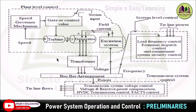This is a complete diagram of plant level and system level control along with the transmission system control. First we see about the plant level control. In this plant level control, we have a speed governor control that is otherwise called primary ALFC control — automatic load frequency control.